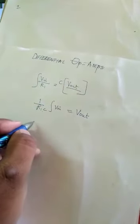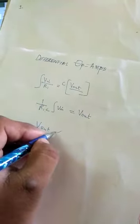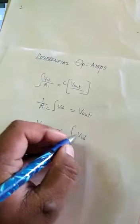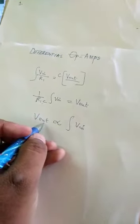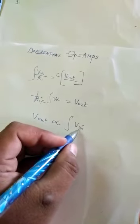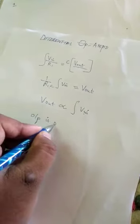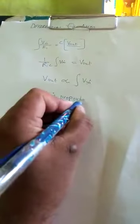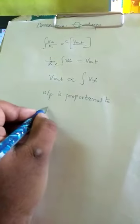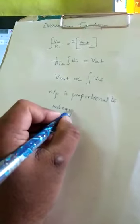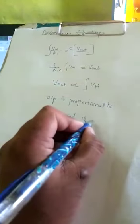If you remove the proportionality constant, V out is proportional to integration of V in. The voltage across the output is proportional to the integral of the input voltage. Hence our operational amplifier output is proportional to integral of input supply.